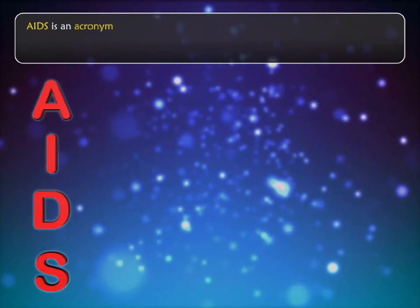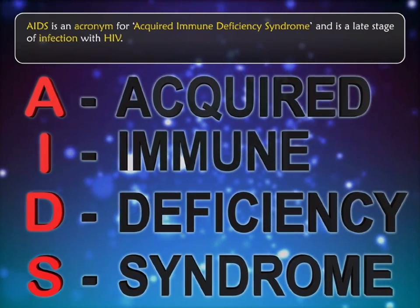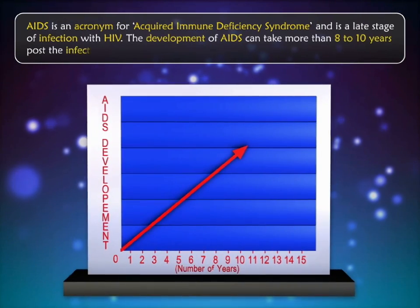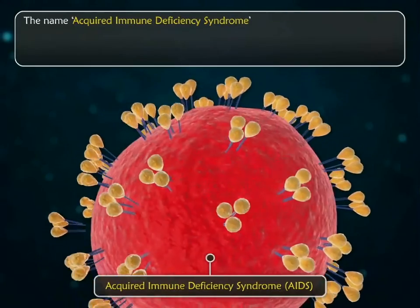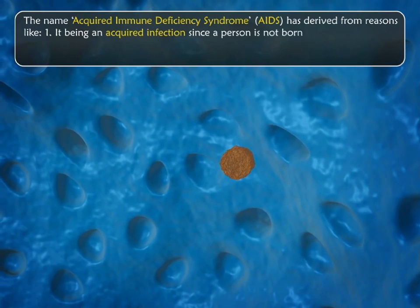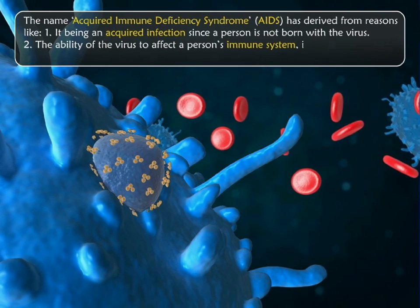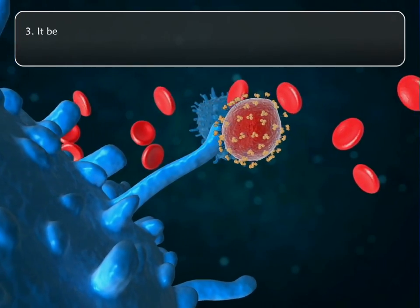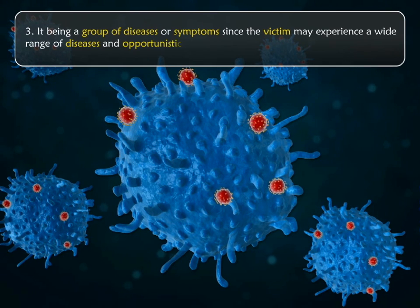AIDS is an acronym for Acquired Immune Deficiency Syndrome and is a late stage of infection with HIV. The development of AIDS can take more than 8 to 10 years post the infection. The name has been derived from: it being an acquired infection since a person is not born with the virus; the ability of the virus to affect a person's immune system and make it deficient; and it being a group of diseases or symptoms since the victim may experience a wide range of diseases and opportunistic infections.